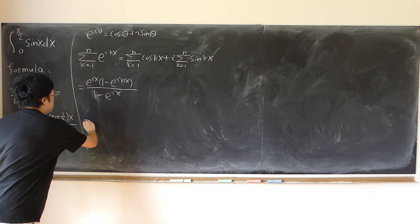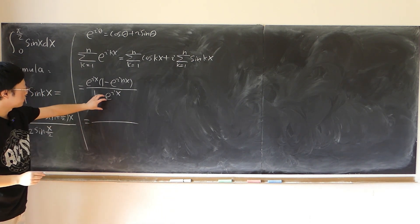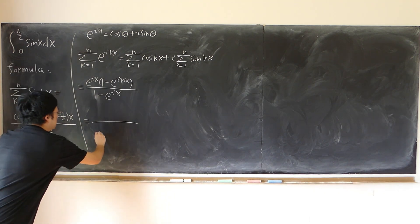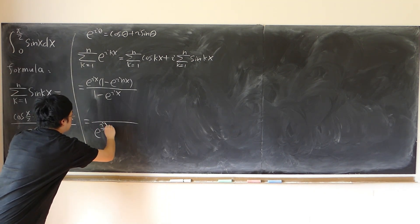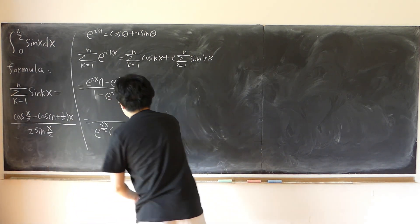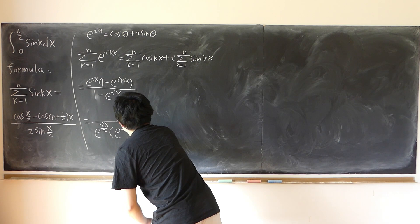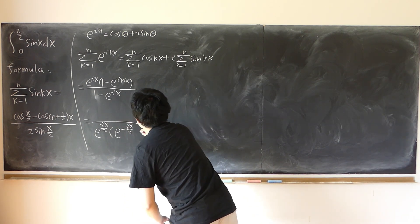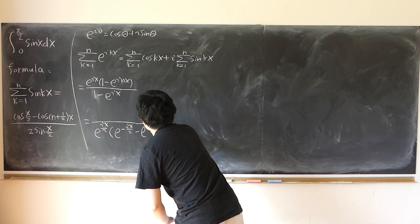Now we factor out the denominator. We factor out e^{ix/2} from the bottom, leaving us with e^{-ix/2} minus e^{ix/2} on the denominator side.